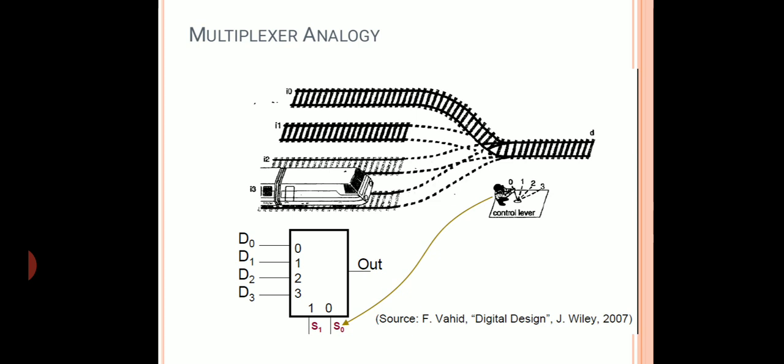Multiplexer analogy: for a railway track, there are various railway tracks present and trains from different tracks — I0, I1, I2, and I3 — can travel on only one output railway track D. You can compare I0, I1, I2, I3 with D0, D1, D2, D3, and the output line is track D. Which railway travels on the output line is decided by a control lever, which is equivalent to the select lines.